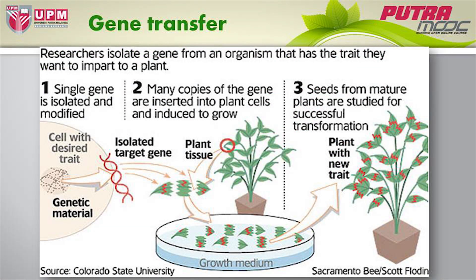Here again is the schematic that shows how gene transfer takes place from a single gene that is isolated and modified. You can see here there are more copies of this particular gene inserted into the plant cells, and they are induced to grow. Seeds from mature plants are then carefully monitored for successful transformation. This is a very fascinating piece of technology that is changing the face of agriculture.